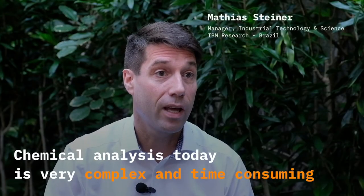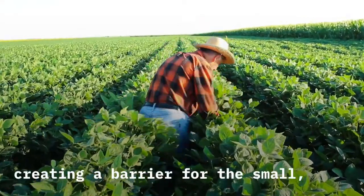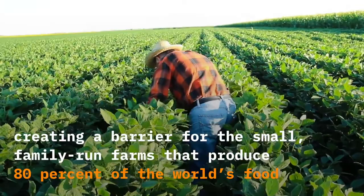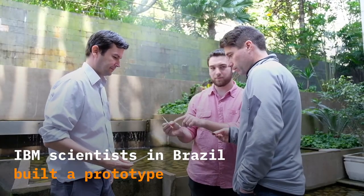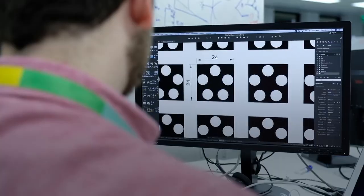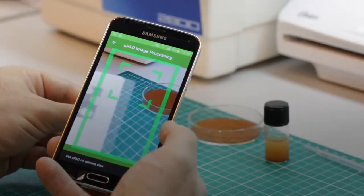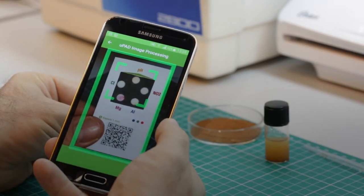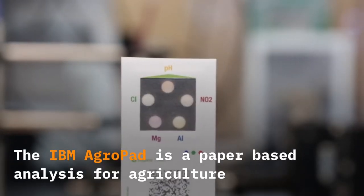Chemical analysis today is very complex and time-consuming. The IBM Agropad is a paper-based analysis for agriculture.